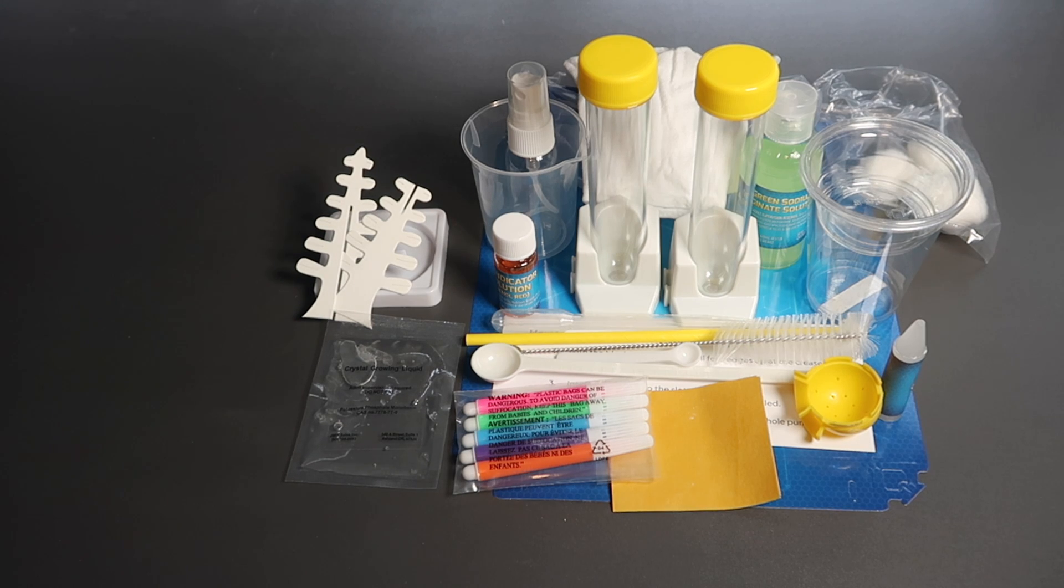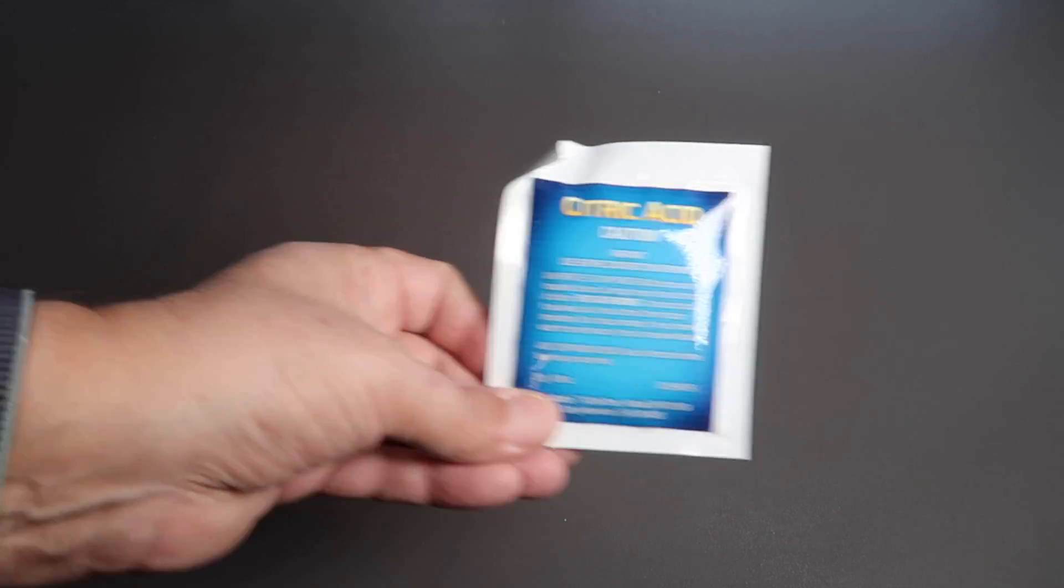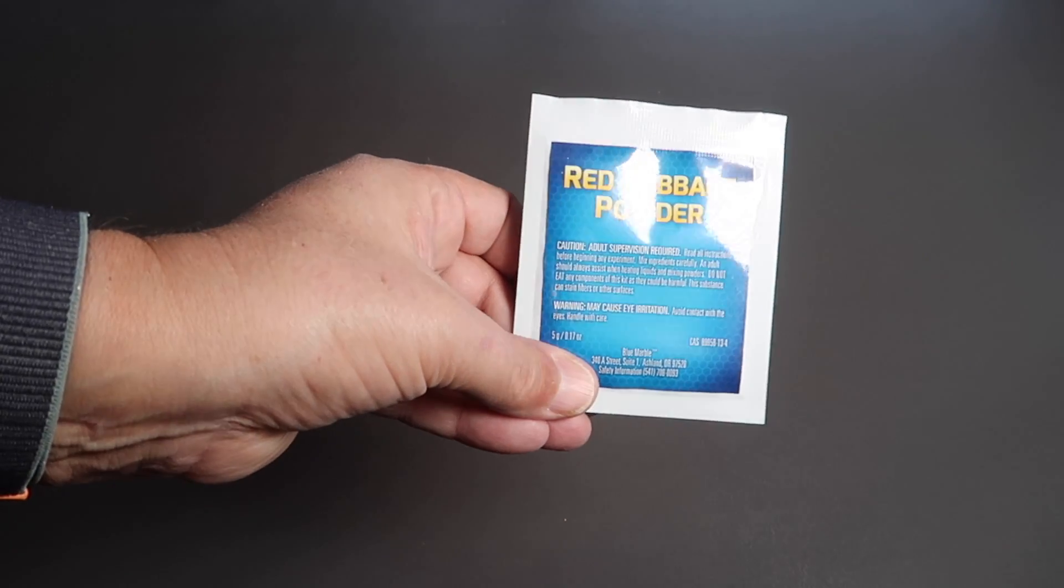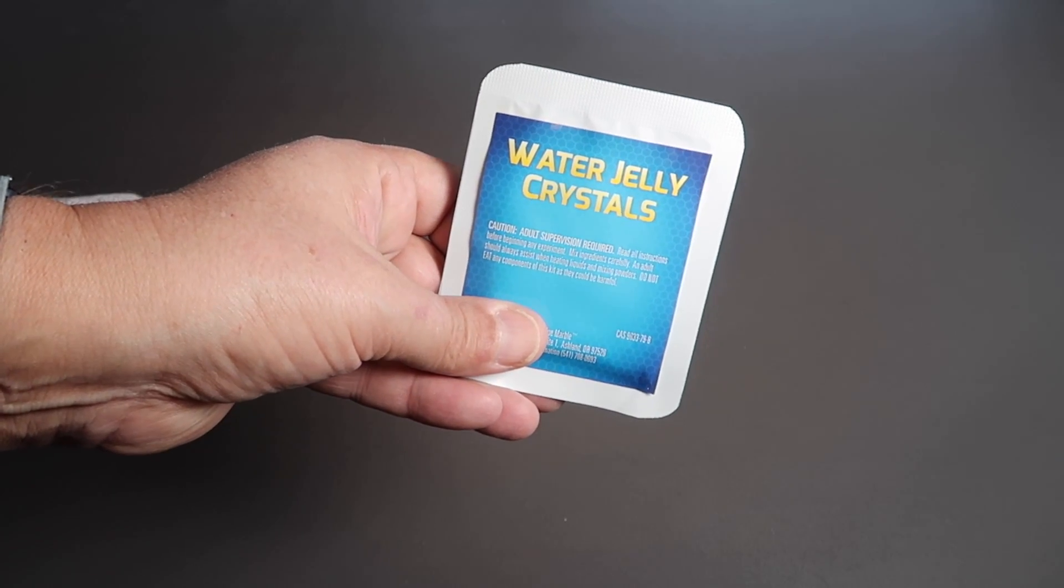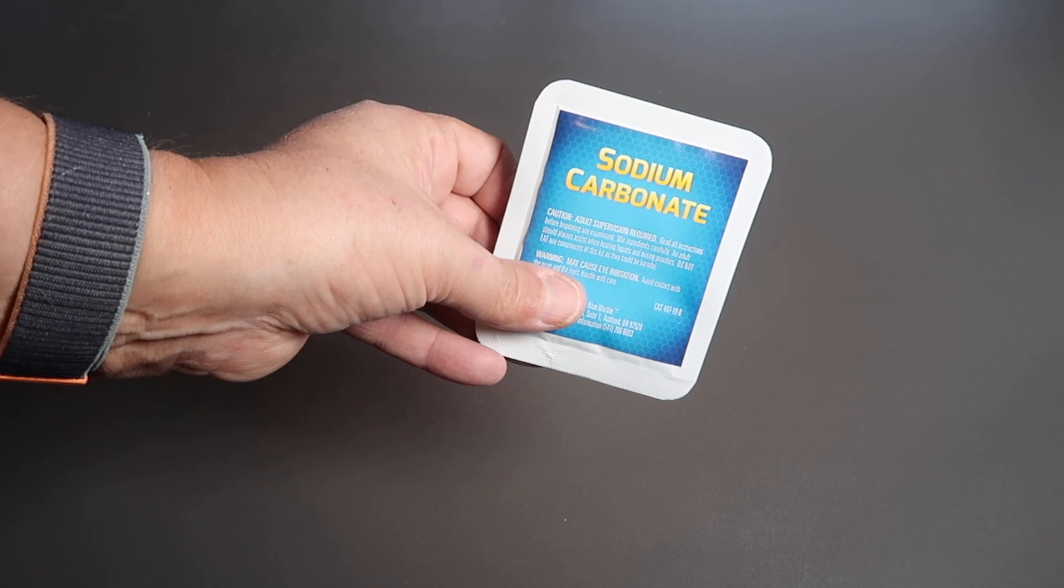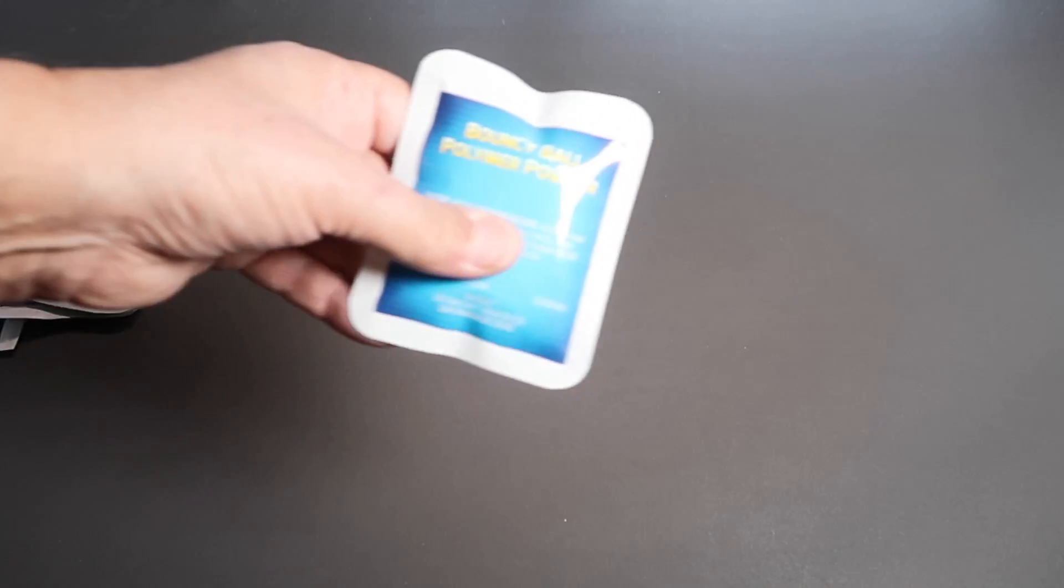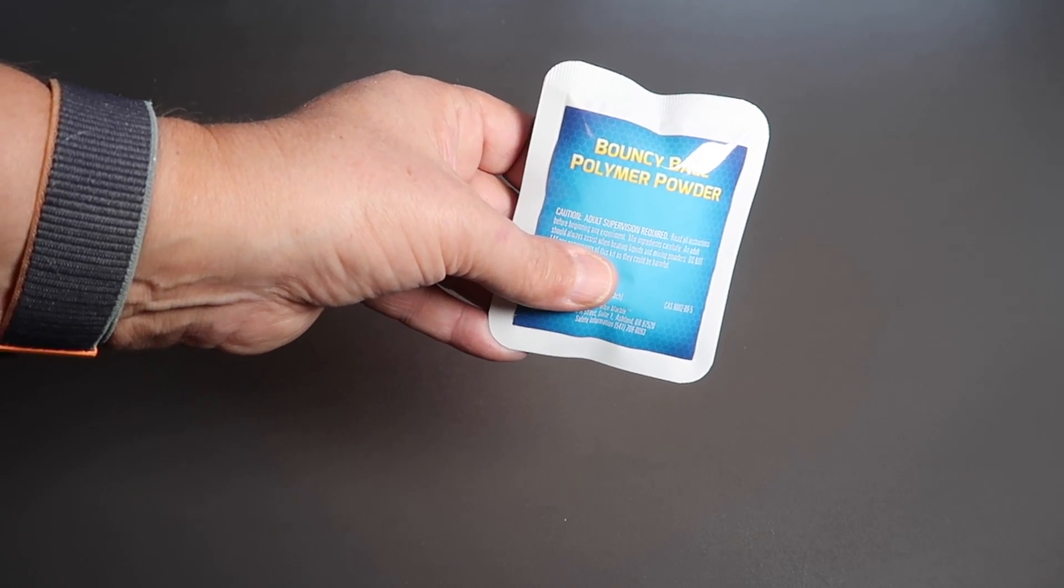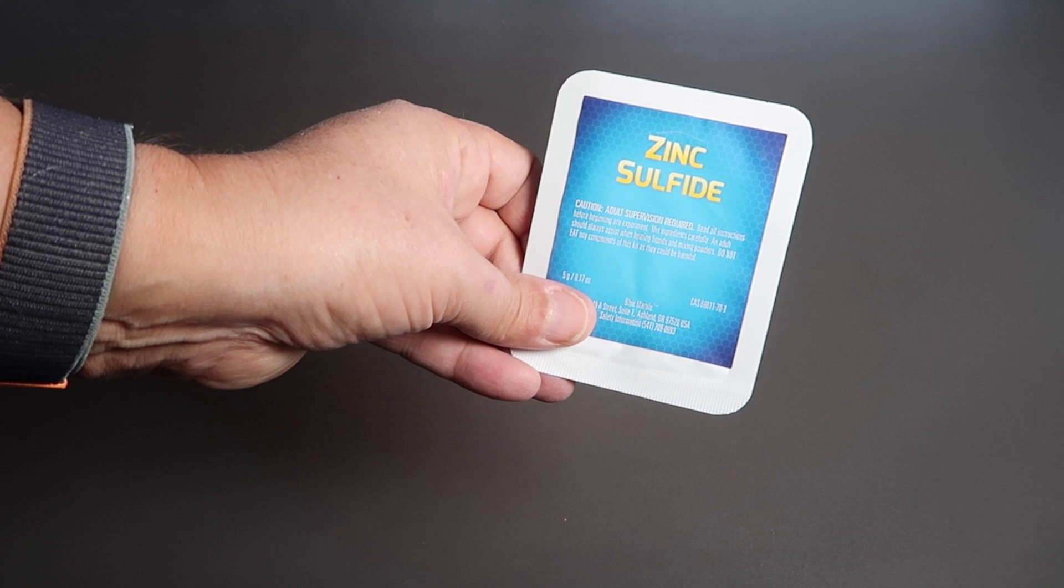And finally, we have a whole bunch of chemicals. Citric acid, red cabbage powder, calcium chloride, water jelly crystals, baking soda sodium bicarbonate, fizzy coloring tablets, sodium carbonate, bouncy ball polymer powder, and zinc sulfide.